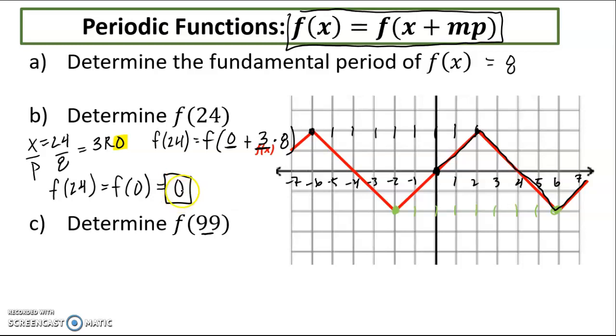Now, zero being my answer and zero being my input is just coincidental. Let's look at another example. My x value, I take my x value, I divide it by my period of 8. This gives me 12, 8 times 12 is 96, with a remainder of 3. So what's the takeaway from here? The remainder. So f of 99 is going to be equal to f of 3, and when I look at my graph, when x equals 3, my y value is 1. So f of 99 has an output of 1.